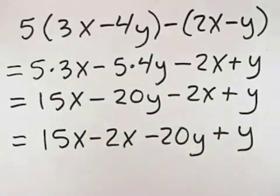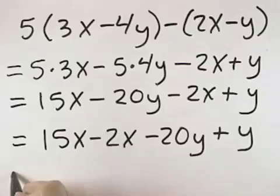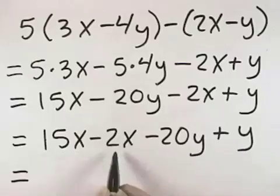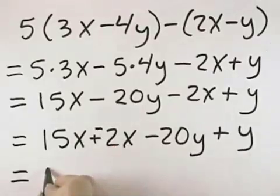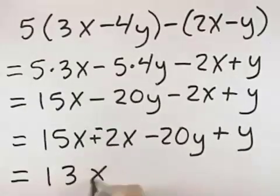And looking at our like terms now, 15x minus 2x is the same as plus a negative 2x. 15 plus negative 2 is 13, so we have 13x.